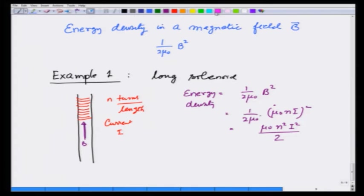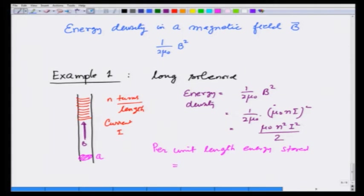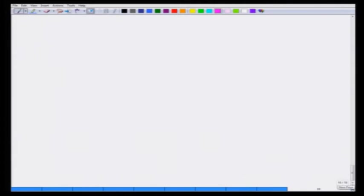Let us see if this makes sense. The energy stored per unit length is going to be the area of cross-section A times the unit length, which gives the volume. So energy stored per unit length is A times mu_0 n squared I squared divided by 2.